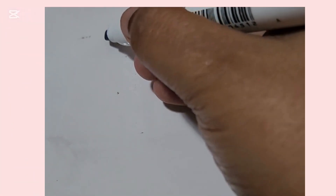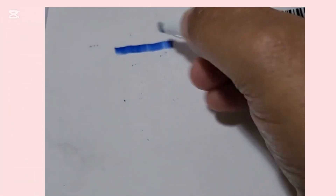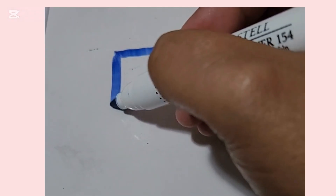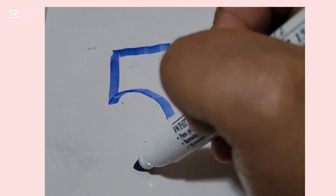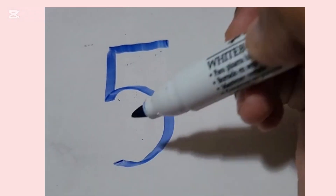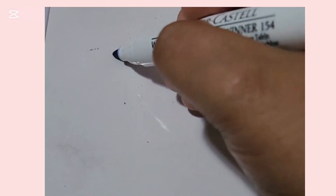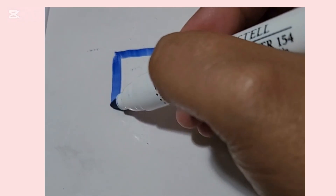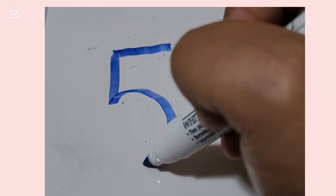Let's take a look at how we write the number 5. We go across, down, and halfway around. Across, down, and halfway around.